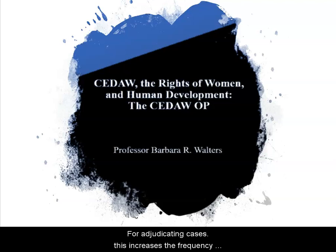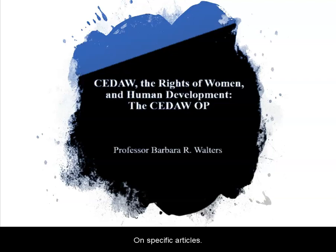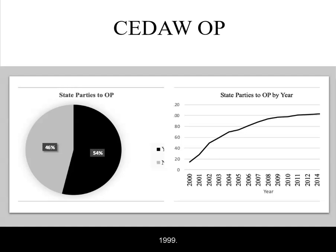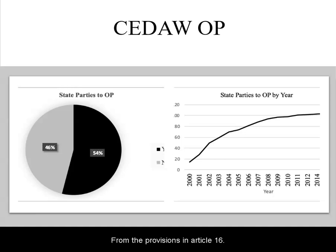This increases the frequency of communication on specific articles. The United Nations General Assembly adopted the CEDAW Optional Protocol on October 8, 1999. The OP was entered into force on December 22, 2000, per the provisions in Article 16.